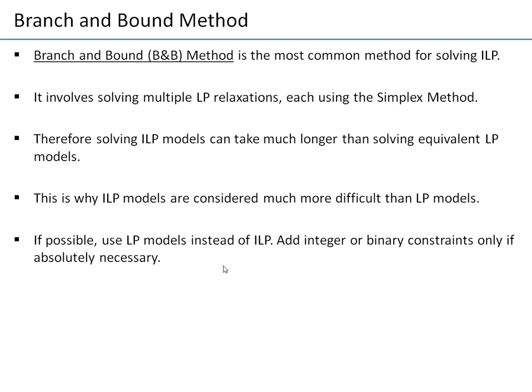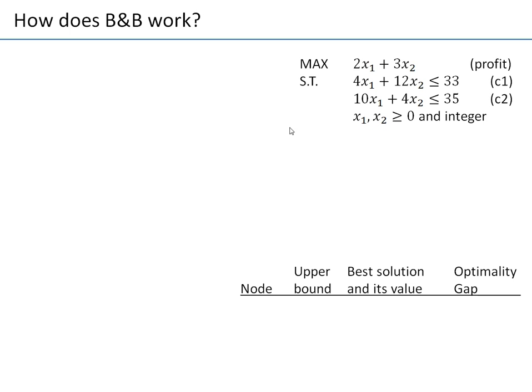I want to show you a sketch of how branch and bound works, on the same problem we just considered. The branch and bound method builds a tree of solutions. It starts from a root node, node 1, in which it solves the linear programming relaxation — you just drop the integer constraint and solve this as a linear programming model.